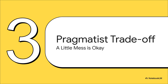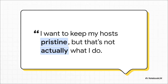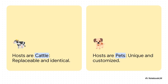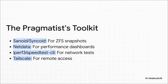Now let's flip the coin and look at the other side — the pragmatists. These are people, a lot of us in the home lab world, who say that purist idea is nice but it's not always realistic. Convenience is a powerful drug. This explains the difference in mindset perfectly through the famous cattle versus pets analogy. For the purist, servers are cattle — identical, nameless, and if one has a problem, you replace it without a second thought. For the pragmatist, the host is often a pet — unique, hand-customized, maybe even with a cute name. Things like Sanoid for ZFS snapshots, Netdata for real-time graphs, iPerf3 for network testing, or Tailscale for easy remote access end up installed. It's all about trading future replaceability for convenience right now.